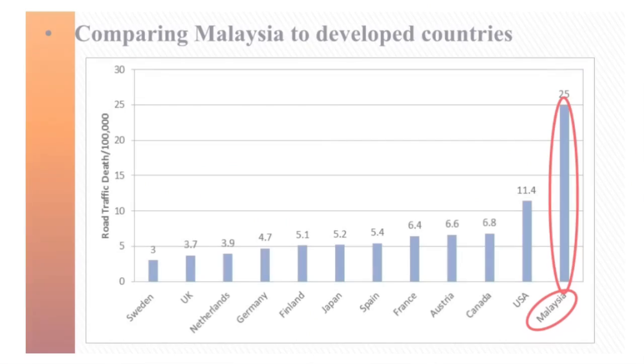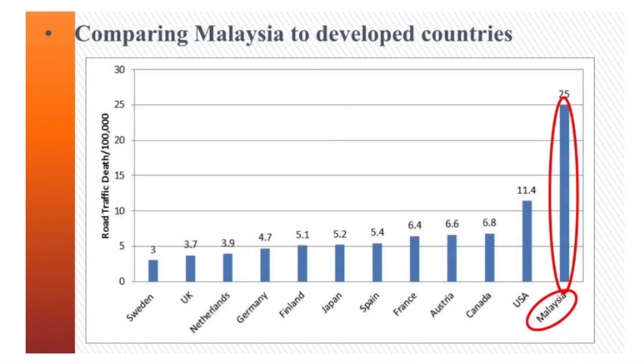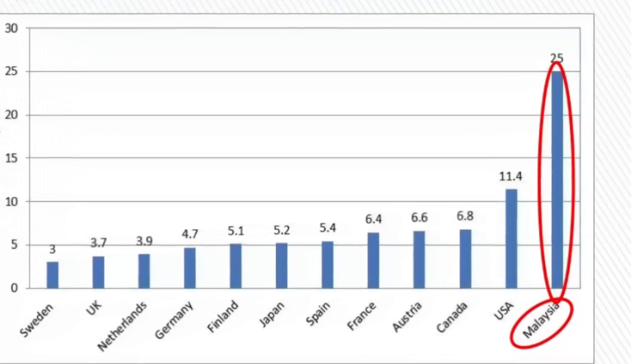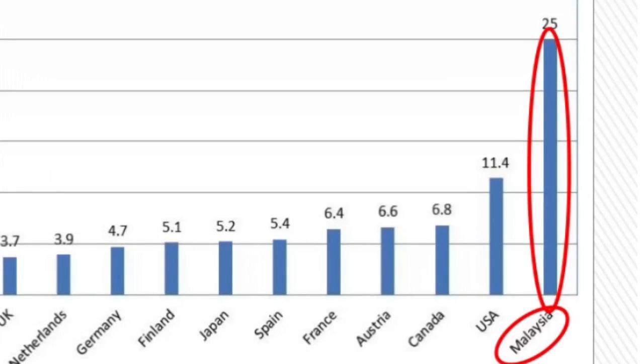Most developing countries have higher fatality rates than developed countries. Malaysia has set its goal to be among the developed countries by year 2020. However, the current fatality rate in Malaysia is much higher than all developed countries. As shown in the illustration, the fatality rate in most developed countries is in the range of about 3 to 7 deaths per 100,000 people, while in Malaysia the rate jumps to approximately 25 deaths per 100,000 population.